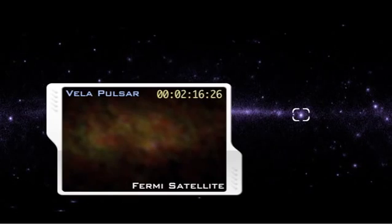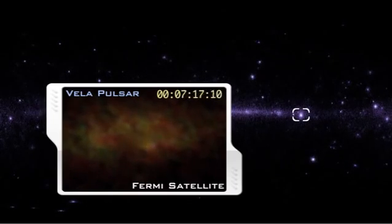This video of the Vela pulsar beams gamma rays every 89 seconds as it rotates.